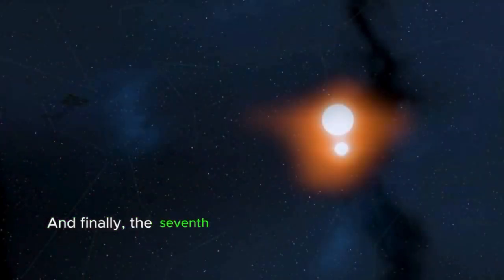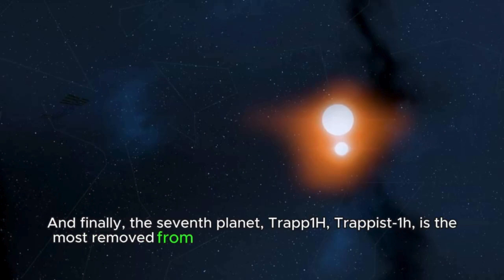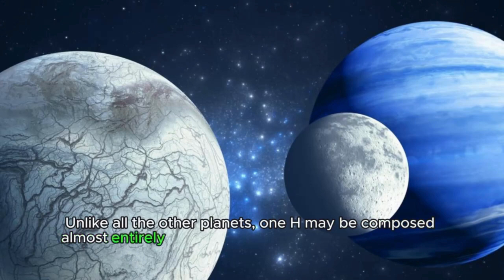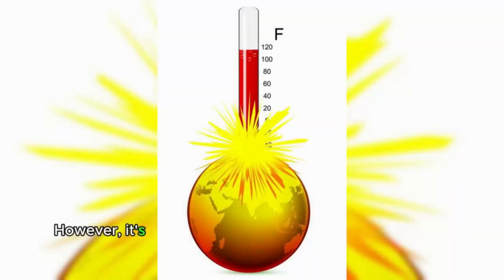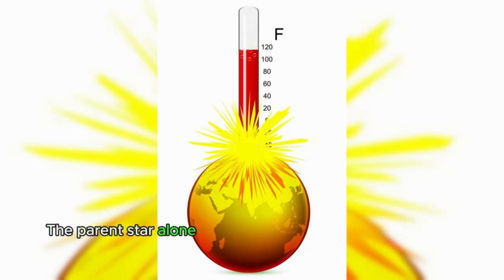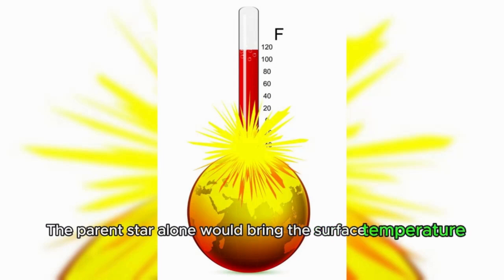And finally, the 7th planet, TRAPPIST-1h, is the most removed from the star, as well as the smallest in the entire system. Unlike all the other planets, 1h may be composed almost entirely of water and is likely to have very little rock in its composition. However, it's likely also that 1h is heated much less than the others. The parent star alone would bring the surface temperature to only about negative 153 degrees Fahrenheit.